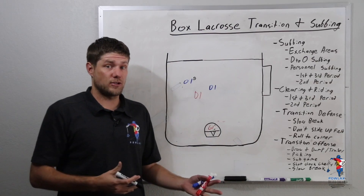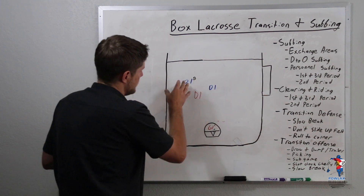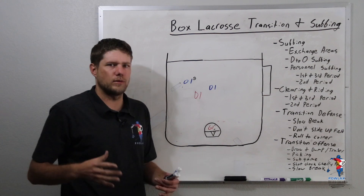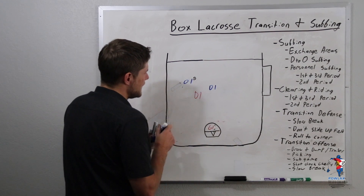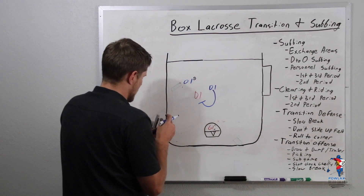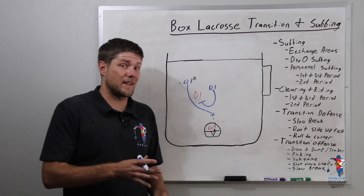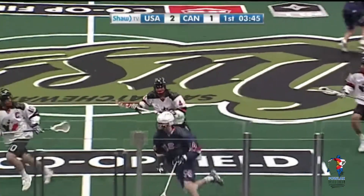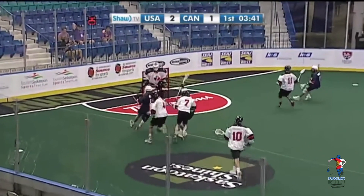Another cool thing we can do if we have an advantage coming into the offensive side is actually just set a pick in transition rather than draw and dump. Let's say O1 has the ball and D1 is kind of defending him. Rather than having D1 cut the middle, if he's a player who doesn't have the best finishing skills, instead of coming to the opposite side of the floor and drawing and dumping, he can just come under and set a pick on D1 so that O1 can come around him, get to the middle of the field, and take his shot. In this play, this player splits a double to create offensive transition. He sets an up pick, the player comes around it, gets to the middle of the field, and scores.